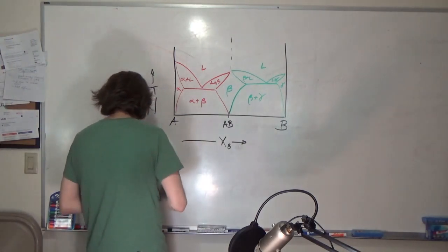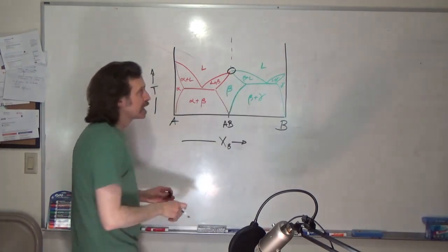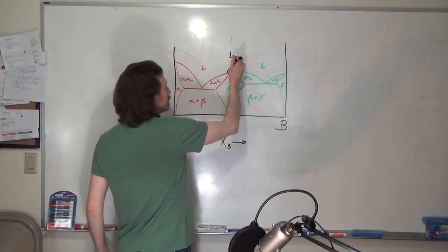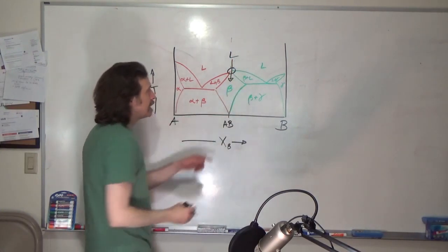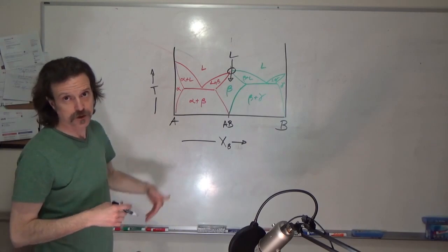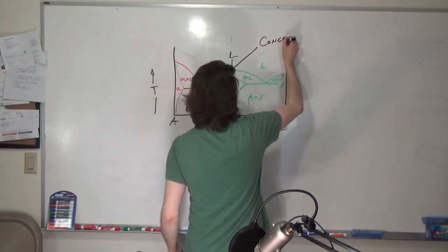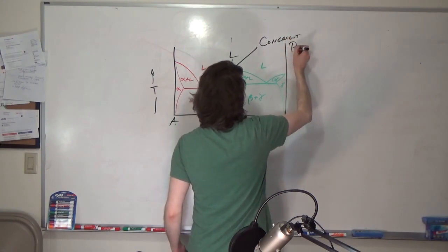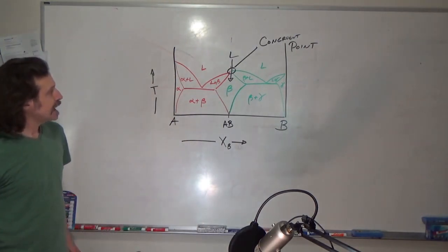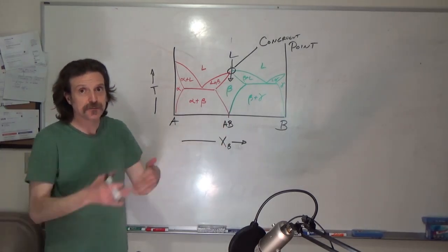This point here is kind of interesting. Up here you have liquid, and the liquid transitions directly into beta — that's called congruent melting or congruent freezing. That occurs because AB is a stoichiometric compound — it's stoichiometrically perfect.